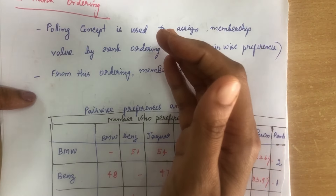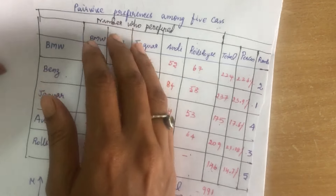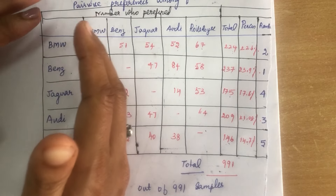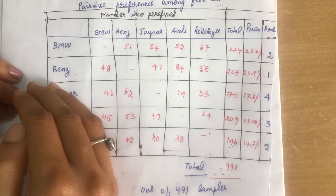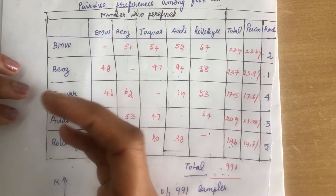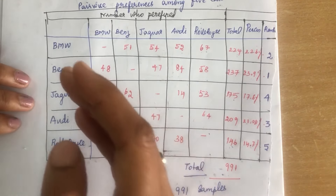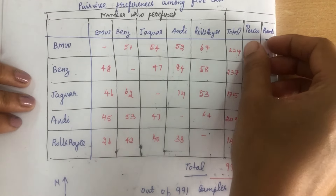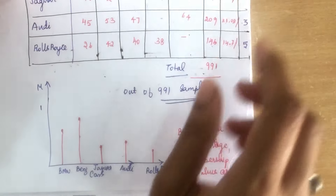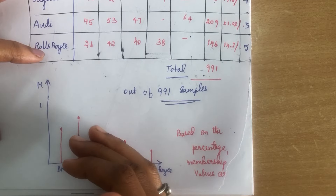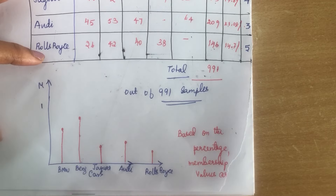There are various ways to assign membership values for fuzzy variables, and rank ordering is one such concept, where pairwise comparisons are made — whether for cars, colors, or any other concept. After comparison, we get percentages, derive the ranking, and use the ranking to draw membership values for every item being evaluated.